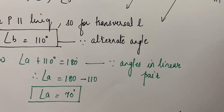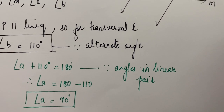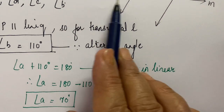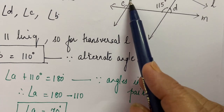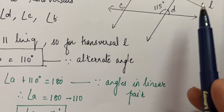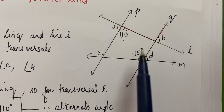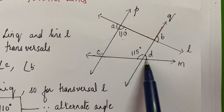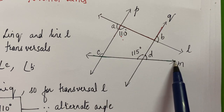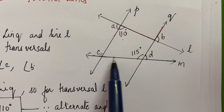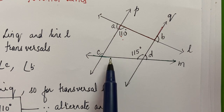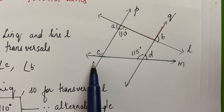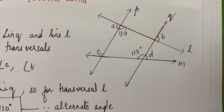We got angle A and angle B. Now we are left with angle C and angle D. Coming back to these parallel lines, line P is parallel to line Q. If you see the figure, transversal M — for this transversal M, you can see the corresponding angles: angle C and 115°. They are corresponding angles, so they will be congruent. Therefore the measure of angle C will be 115 degrees.